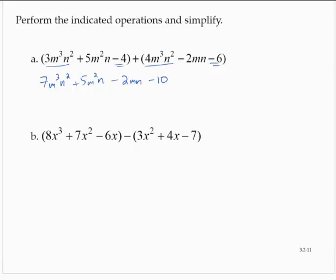Exercise b. 8x cubed plus 7x squared minus 6x. Let's subtract the quantity 3x squared plus 4x minus 7. What I would recommend here, since this is a subtraction, is to distribute that subtraction through. So I'd have 8x cubed plus 7x squared minus 6x, and now distributing the subtraction, minus 3x squared minus 4x plus 7.